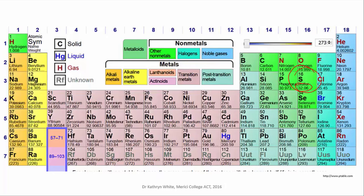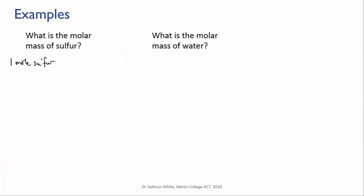From this we directly get the molar mass. If one mole of sulfur weighs 32.06 grams, then the molar mass of sulfur is 32.06 grams per mole.